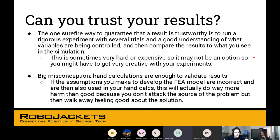Another surefire way to guarantee that a result is trustworthy is to run actual experiments. If you could have several trials and get an understanding of what variables you're controlling, then you compare those results to a simulation. This is not always possible. In BattleBots, if you're testing out a weapon and that weapon gets destroyed during a trial, it'll be expensive to keep creating the weapon again and again. So you might have to get creative with your experiments.